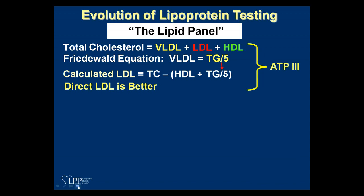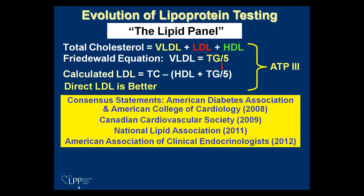These are the guidance we use in ATP-3 to determine risk assessment. Starting in 2008, consensus statements emerged from the American Diabetes Association, the American College of Cardiology, the Canadian Cardiovascular Society, the National Lipid Association, and later the Association of Clinical Endocrinologists — all stating that particle numbers, as measured by ApoB or other methods, are more predictive of risk than cholesterol.